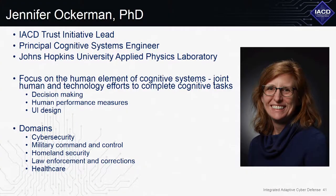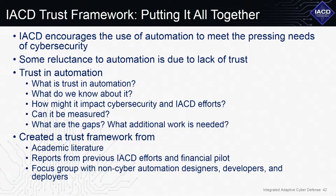I've worked in a lot of different domains, and trust goes across all those different domains. There are some standard human issues that come up with automation in any of these different domains. Most recently, I'm working in cybersecurity. We started off knowing that IACD encourages the use of automation to meet these pressing needs of cybersecurity. We would like people to use more automation to increase their ability to deal with cyber threats, however there is some reluctance to using automation, and some of that reluctance is due to a lack of trust.